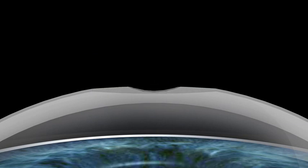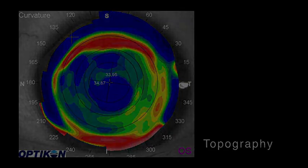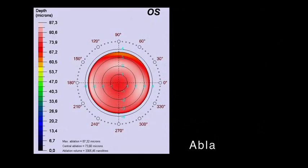TransPRK applied to regular corneas provides efficacious, safe, stable, and reliable results. Transepithelial approaches allow maximum correspondence between the corneal topography and the ablation profile. The sophisticated Amaris software compensates for the slight differences in photoablative rates of the stroma and the epithelial tissue.